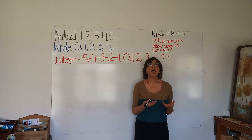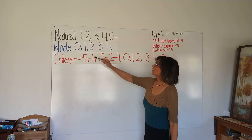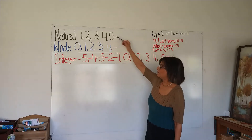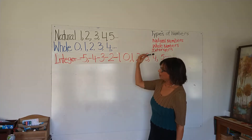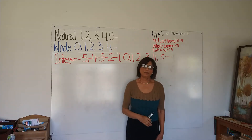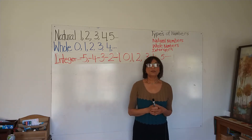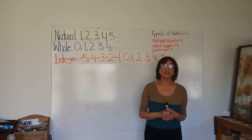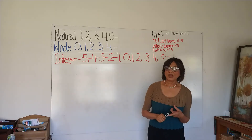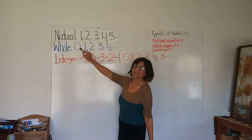three, four, five, and so on. I have written here: natural numbers are one, two, three, four, five, and so on. What are the whole numbers? Whole numbers are the numbers when we put zero in front of one, as I did here.